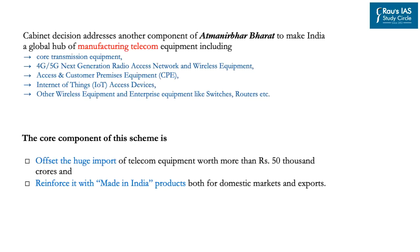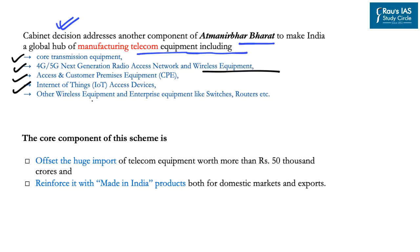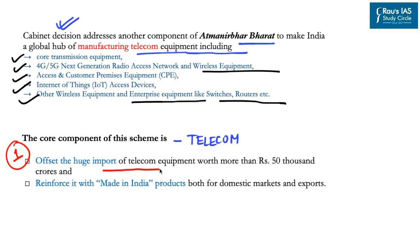Regarding the PLI scheme approved for the telecom sector, the cabinet decision aims to make India a global hub for manufacturing telecom equipment, including core transmission equipment; 4G and 5G next generation radio access network and wireless equipment; access and customer premise equipment; internet of things access devices and other wireless equipment; and enterprise equipment like switches and routers. A core component of the scheme is to offset huge imports of telecom equipment worth more than Rs 50,000 crores.